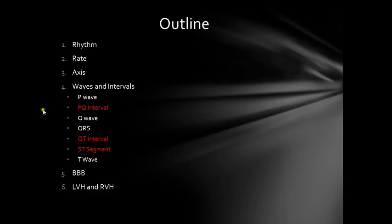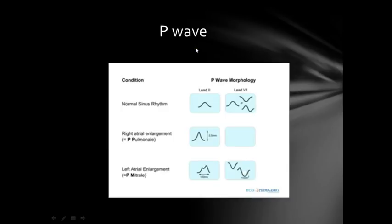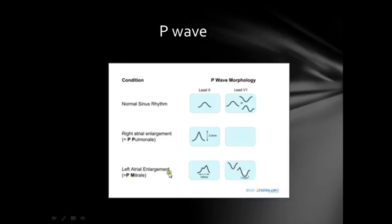Now we go to the ECG complex. First thing is the P wave — it's a simple thing. The important thing to look for first is presence: is it present or not? It's absent in some arrhythmias. If it's present, is it of normal morphology or not? We look at lead 2 for the normal P wave morphology. If the P wave is peaked, this is called right atrial enlargement or P pulmonale. If it's M-shaped, this is called P mitrale — M for the M-shape — and this means left atrial enlargement.